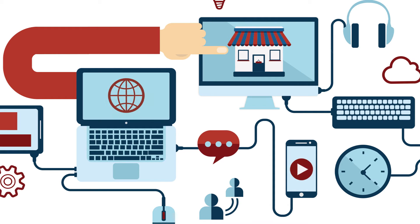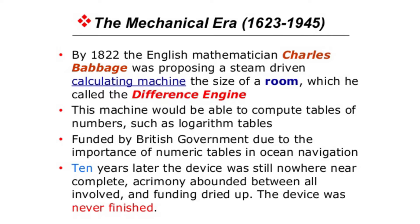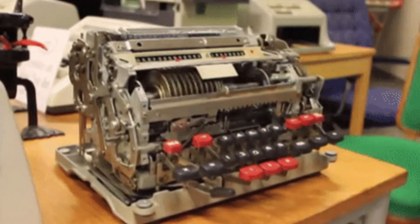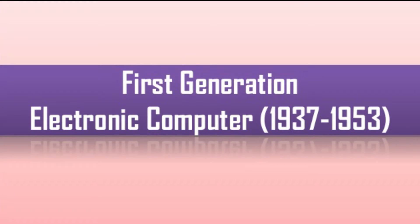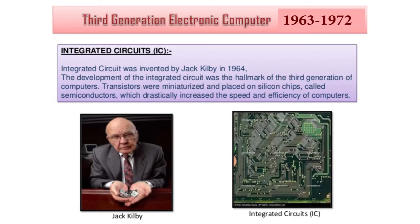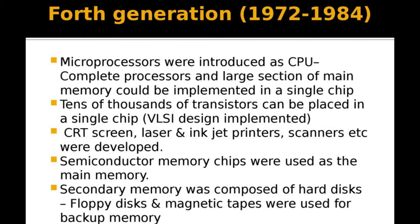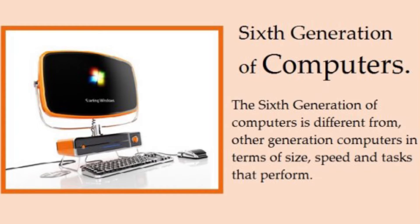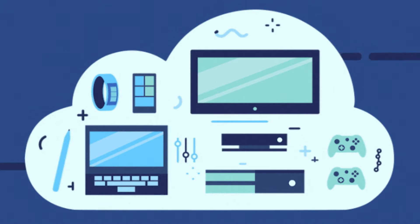There are many generations of information technology. First, the mechanical era: 1623 to 1945, used for calculations using machines, though the actual machine could not store data. The first generation of electronic computers started from 1937 to 1953. Second generation: 1954 to 1962. Third generation: 1963 to 1972. Fourth generation: 1972 to 1984. Fifth generation: 1984 to 1990. Sixth generation: 1992 till now. We are currently in the 6th generation of technology, and one category is information technology.